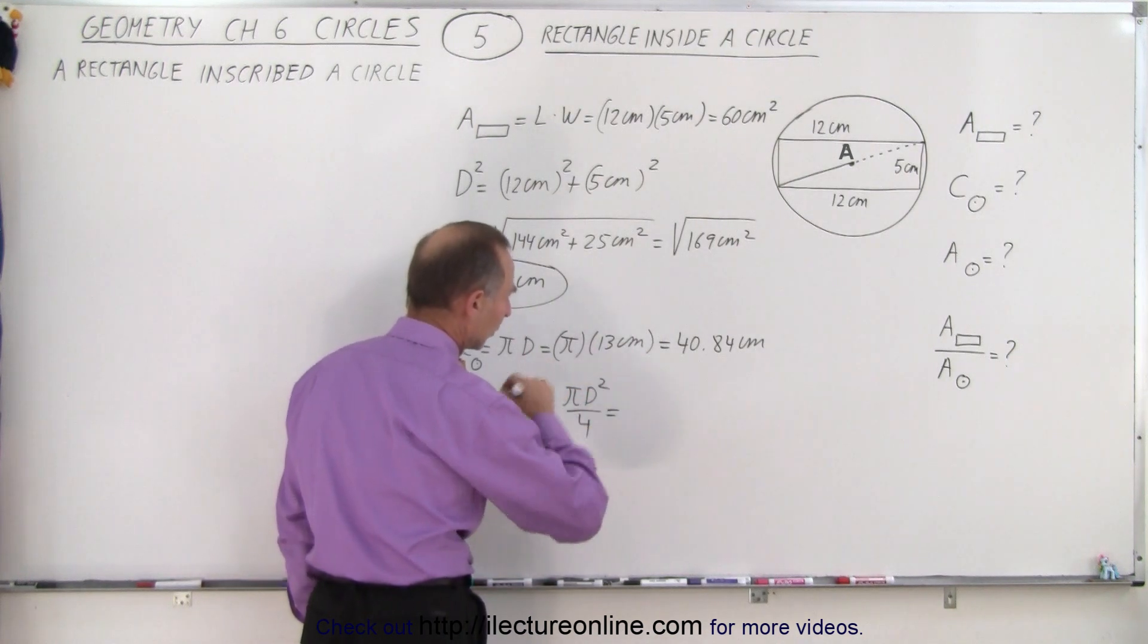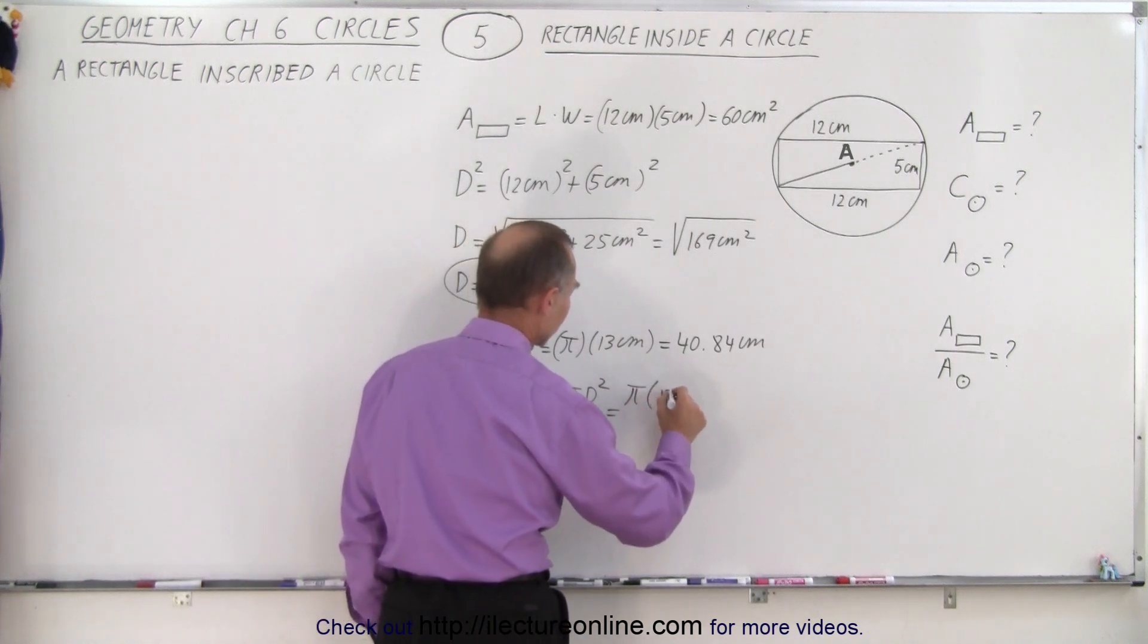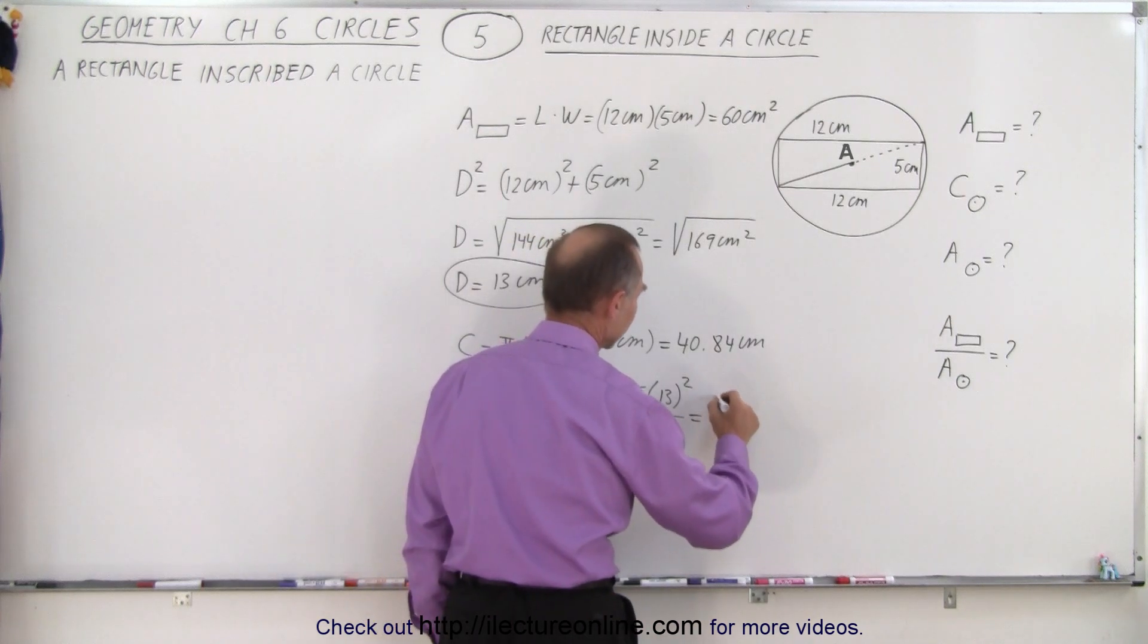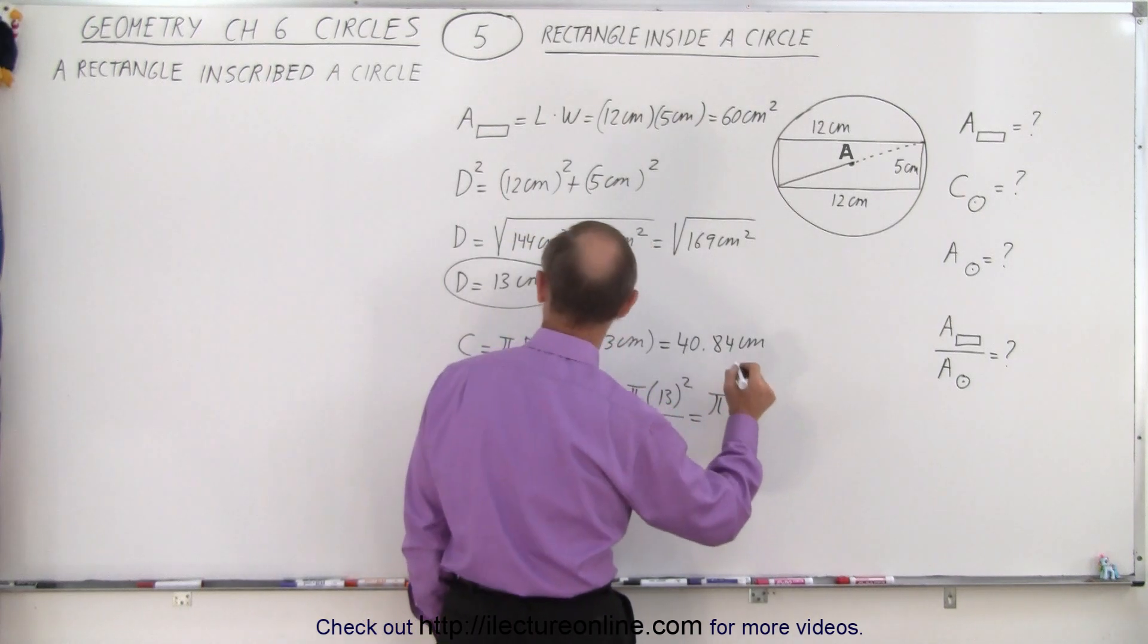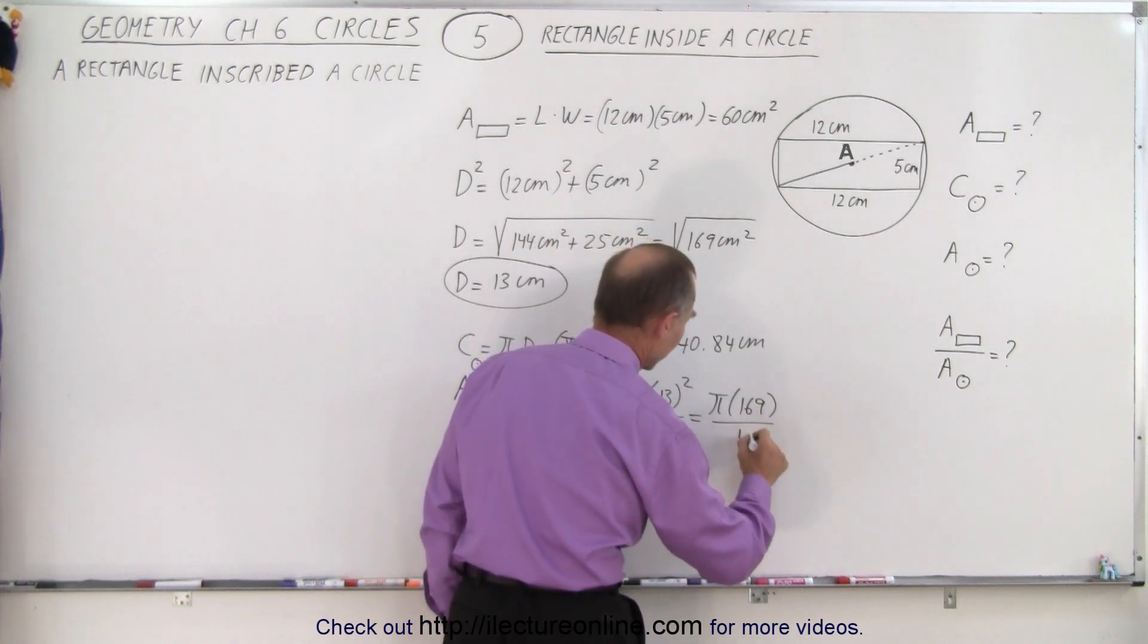That is equal to Pi R squared or Pi D squared over 4. Since we know the diameter, we'll use that. So that would be Pi times 13 squared divided by 4, which is equal to Pi times 169 divided by 4.